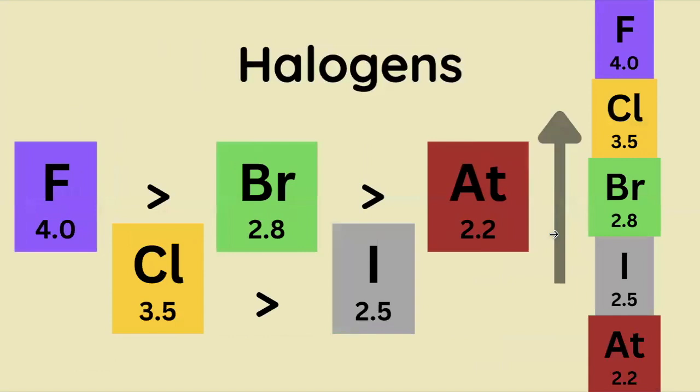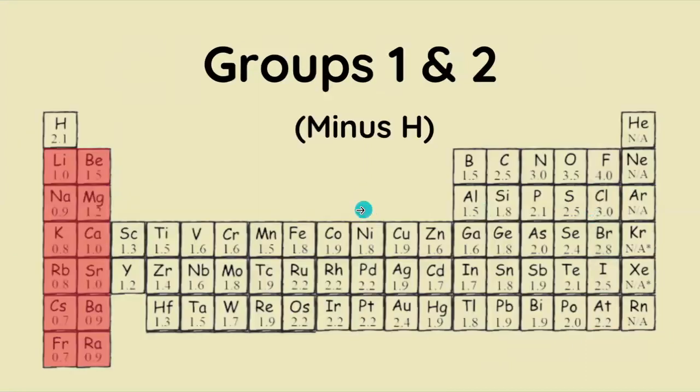You might have also noticed that as we go up on the periodic table, this is a general trend—we increase in the electronegativity value. Next up, we're going to look at groups one and two.